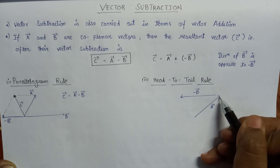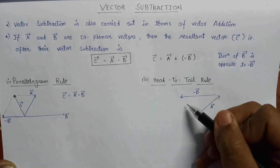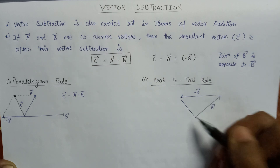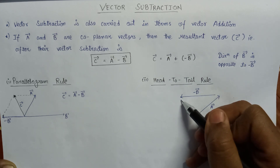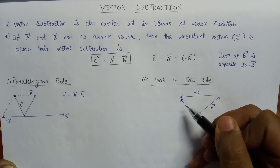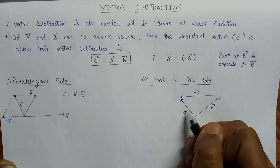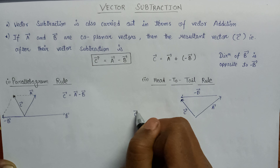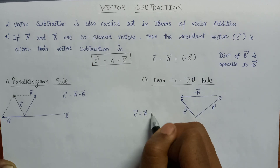This is minus B vector. The head of A vector is connected with the tail of minus B vector. Then according to the head-to-tail rule, the tail of the resultant vector is connected to the tail of A vector, and the head of the resultant vector is connected with the head of minus B vector. So this is C vector, and C vector is given as the subtraction of A vector and B vector.